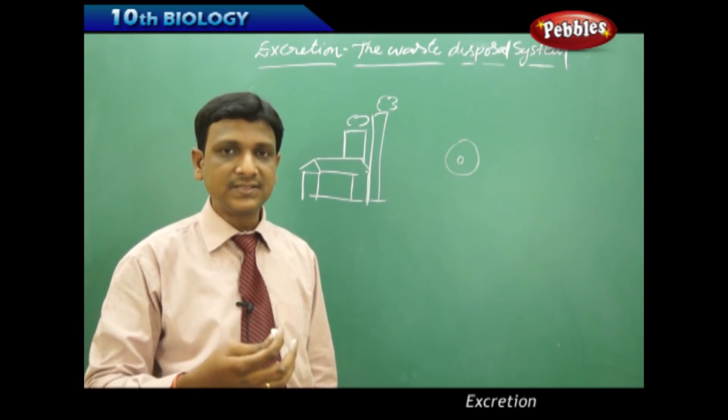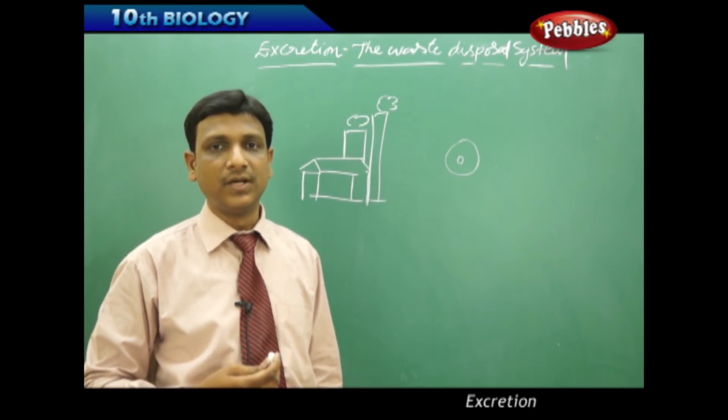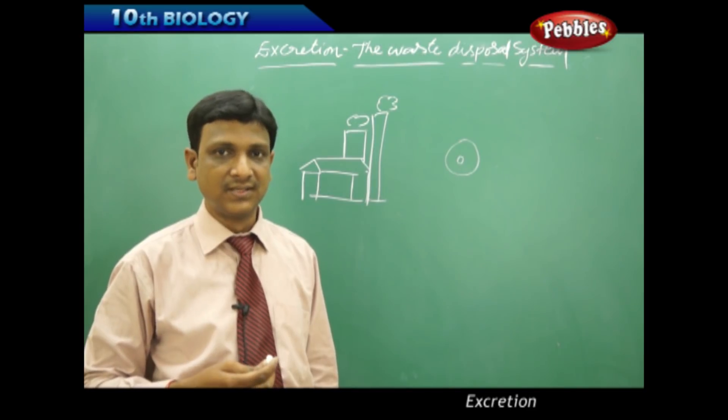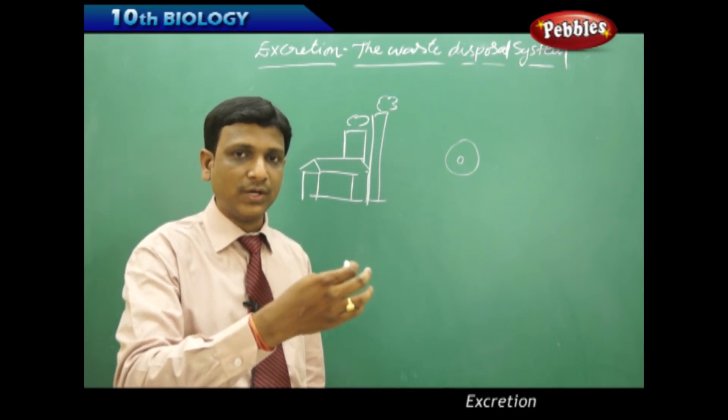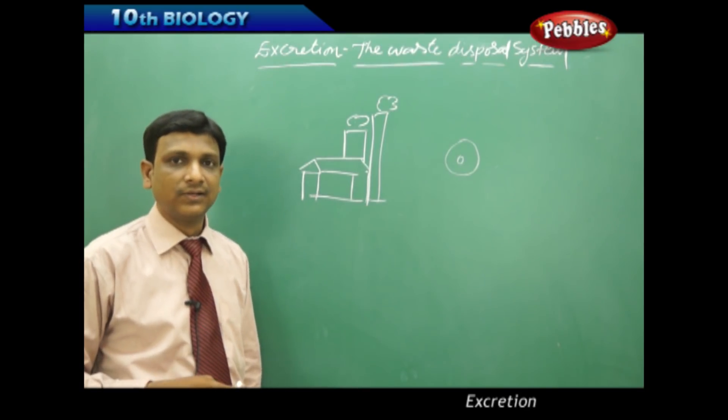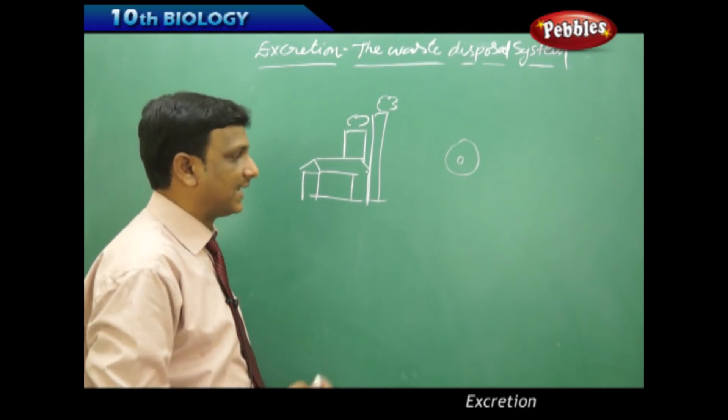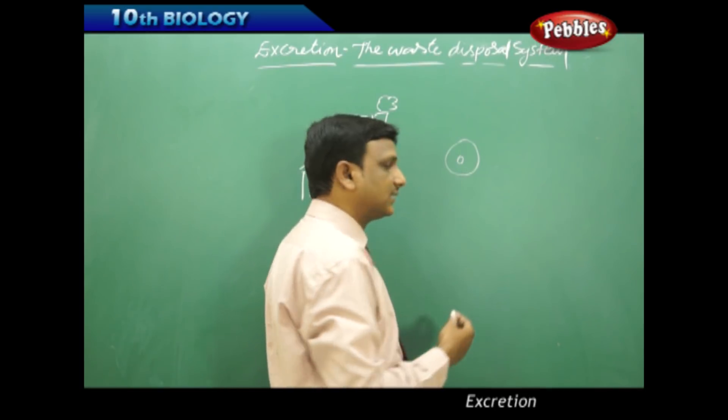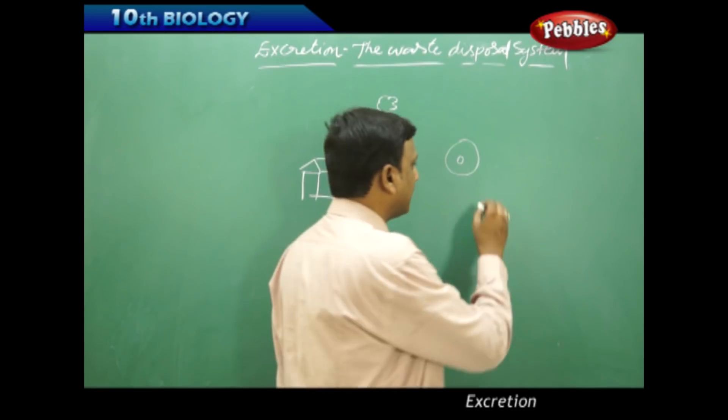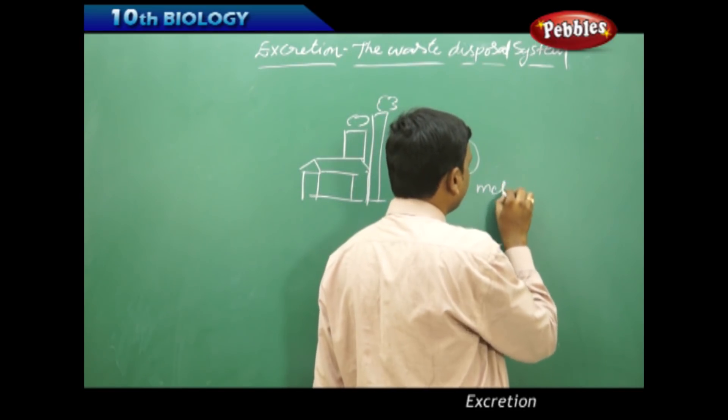Even in our bodies there are so many things produced. Energy is produced from the food. The food which we are taking is broken down to simple molecules in digestive system and the simple molecules are supplied to the cells. The cells are converting these molecules into some other forms which are useful for the activities of the cell. We call these activities which are going inside the cell, inside a living cell, we call them as metabolic activities.